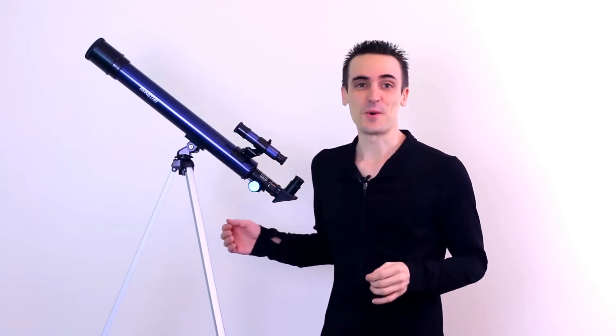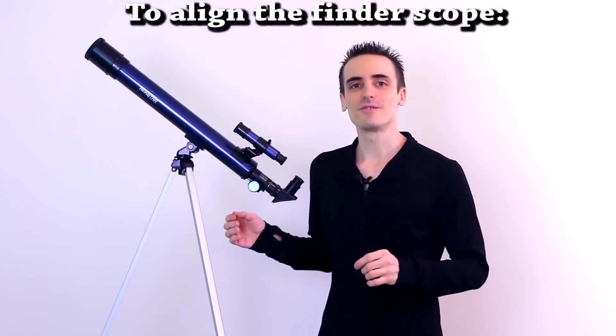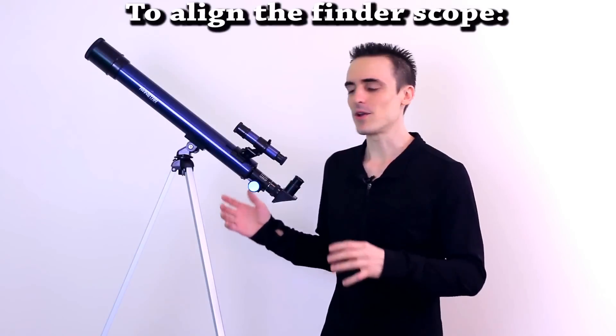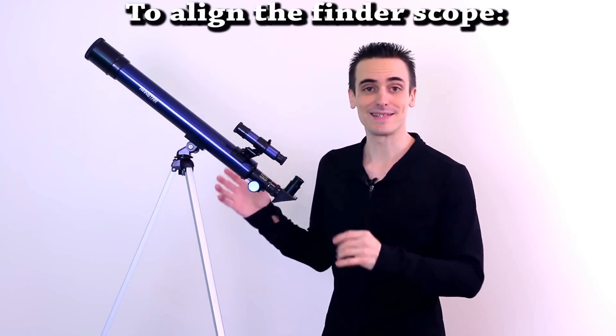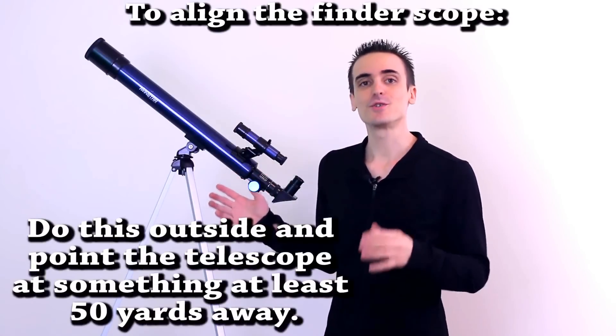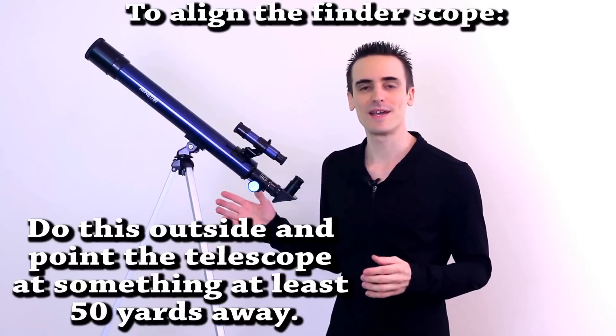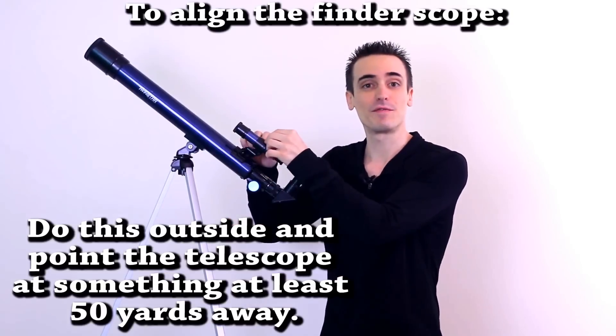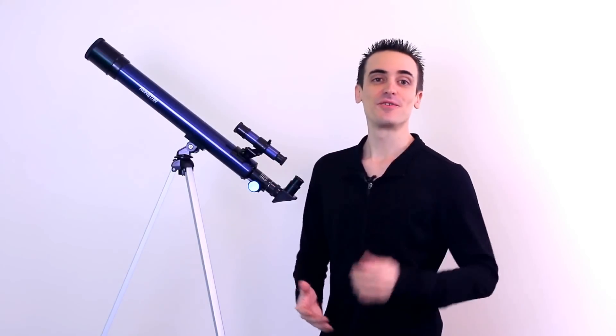Okay, so back to the telescope. Now that the eyepieces are in place, your final step will be to align the finder scope with the main telescope. And the goal is going to be to have both the main telescope and the finder scope pointed at the same object. You're going to find this really easy to do during the daytime. Just point the main telescope at a stationary object about 50 yards away and use the adjustment screws here on the finder scope until it's pointed at the same object as well. And that's all there is to it.